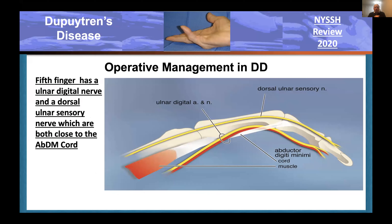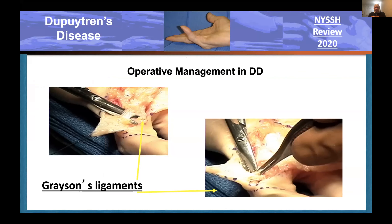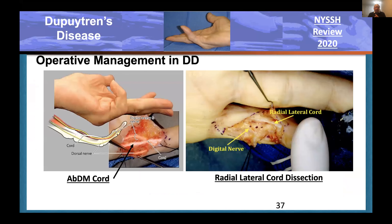When operating in the fifth finger, understand there are essentially two digital nerves. One is the real digital nerve adjacent to the digital artery, which often spirals around the abductor digiti minimi cord, and there's also the dorsal ulnar sensory nerve. At the base of the proximal phalanx, the digital nerve is about three fascicles and the dorsal nerve is two fascicles, so be careful not to injure it to avoid sensory loss and neuroma pain. Here we see loosening of Grayson's ligaments to expose the neurovascular bundle and identify its location before excising the cord.